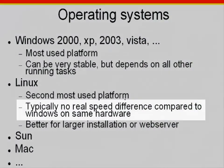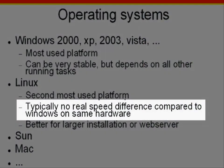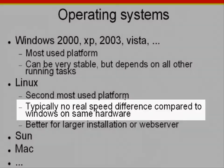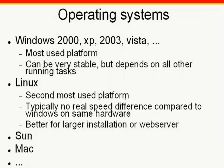Performance variations are minimal when using the same hardware and the same Firebird version. Slight discrepancies in different areas may be detected, for example, due to the chosen file system. These having different advantages and disadvantages, which need to be assessed individually for individual application requirements.